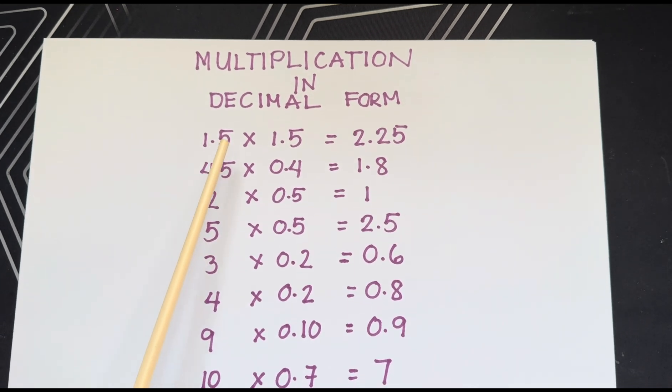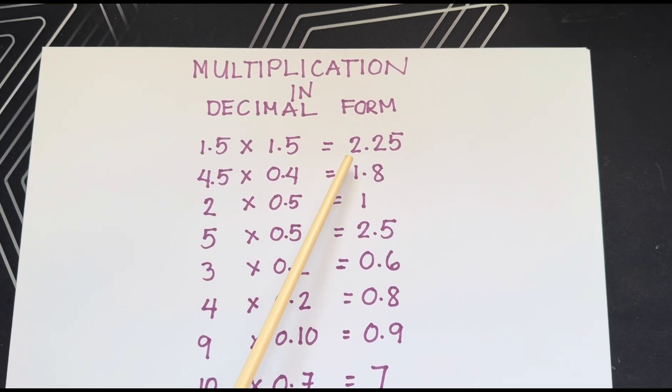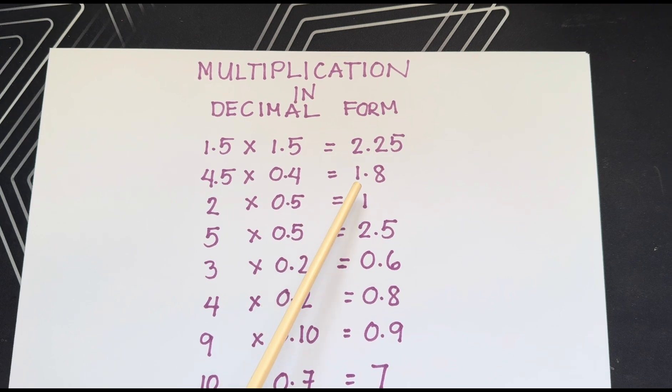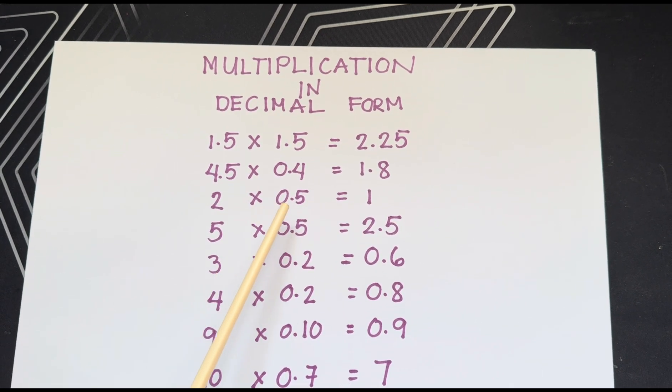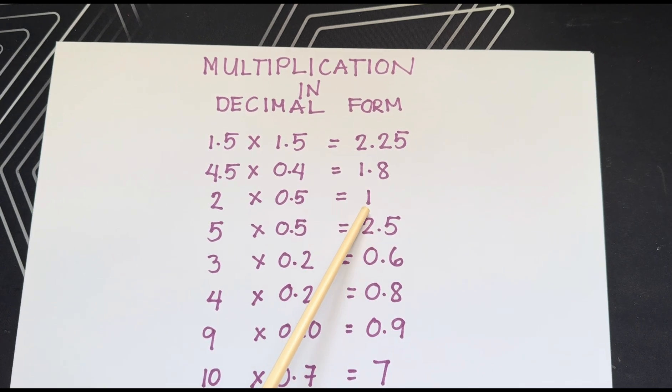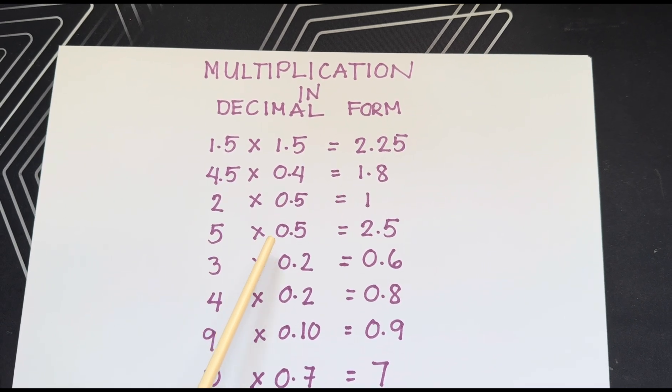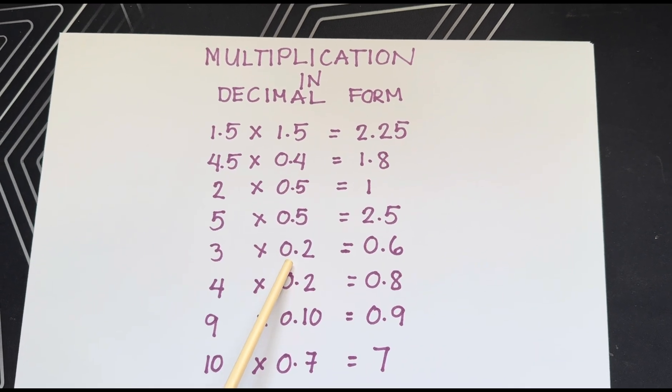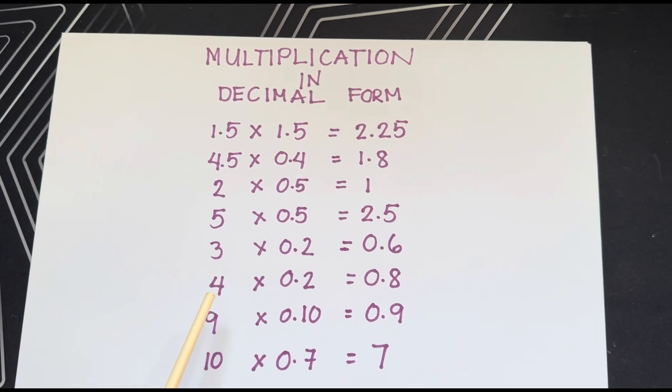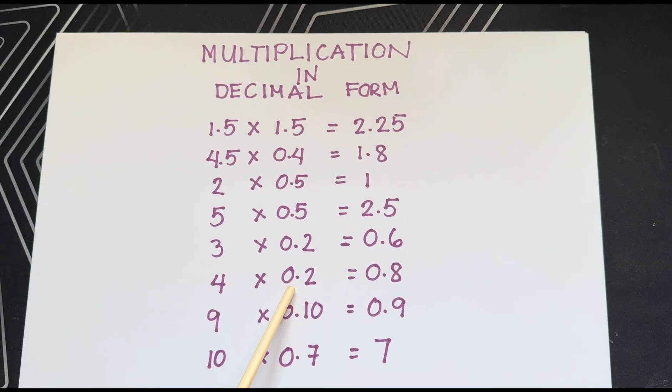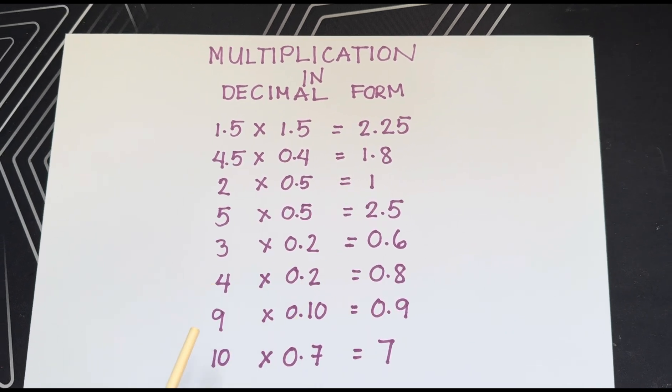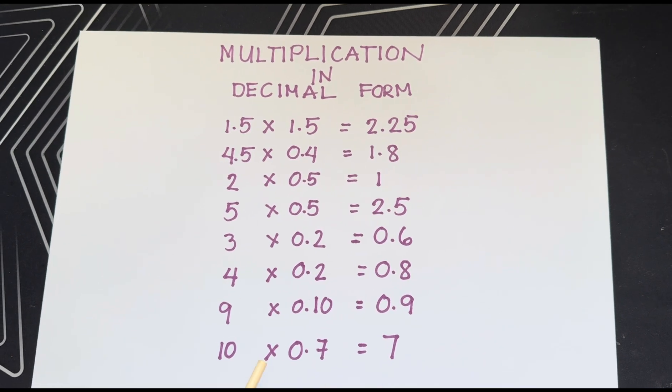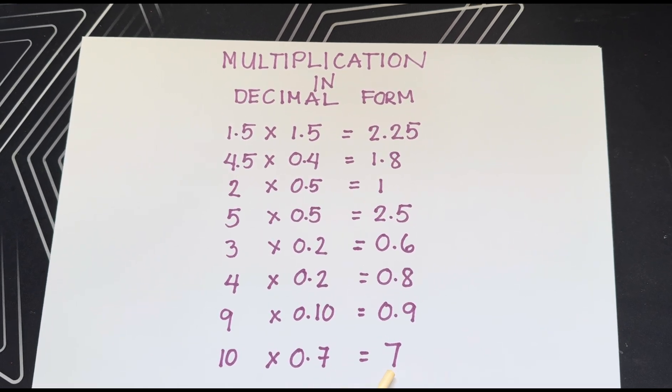1.5 multiplied by 1.5 equals 2.25. 4.5 multiplied by 0.4 equals 1.8. 2 multiplied by 0.5 equals 2.5. 3 multiplied by 0.2 equals 0.6. 4 multiplied by 0.2 equals 0.8. 9 multiplied by 0.10 equals 0.9. Lastly, 10 multiplied by 0.7 equals 7.